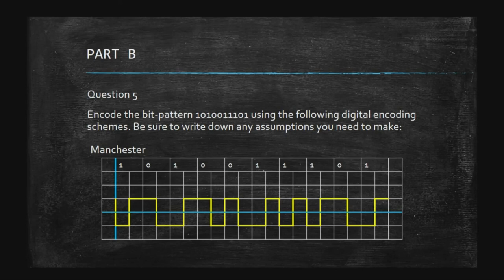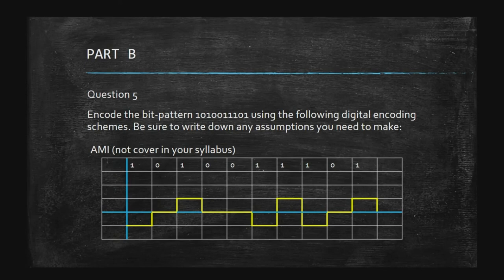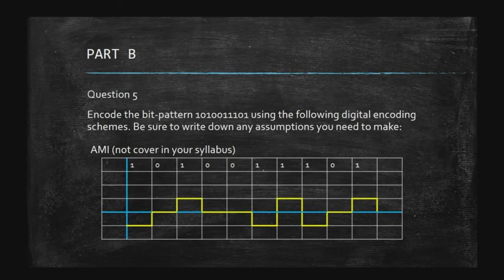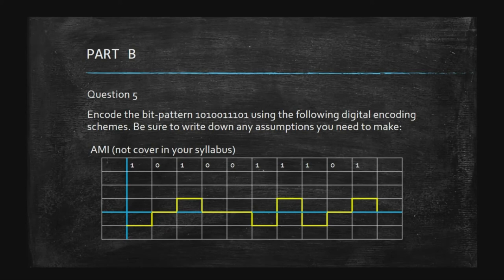The next scheme is AMI, but this is not covered in our syllabus so you can ignore it. Just for reference: in AMI, the value 1 alternates between negative and positive — for example, first 1 is negative, zero stays at the zero line, next 1 is positive, and so on. We'll continue in the next video for the second part of our discussion. Thank you and assalamualaikum.